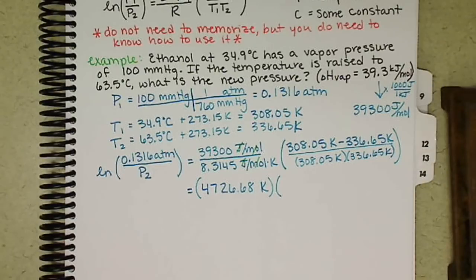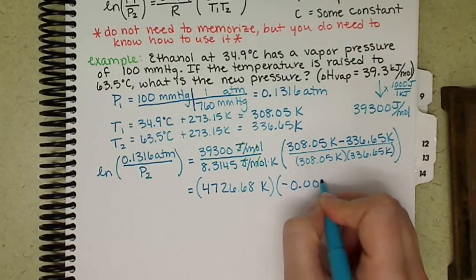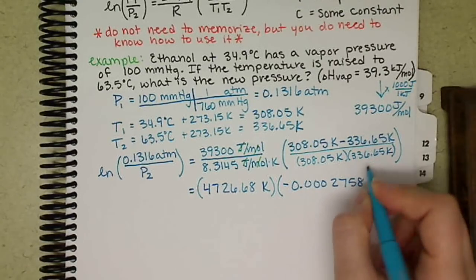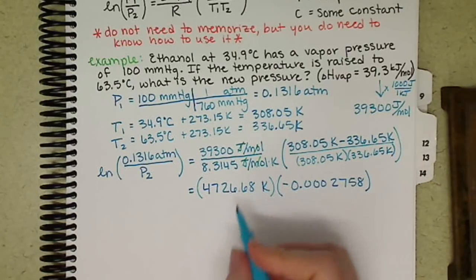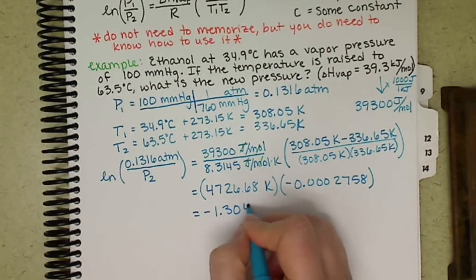negative 0.0002758, that becomes unitless. Multiply these two numbers out on my right hand side, I get negative 1.304.